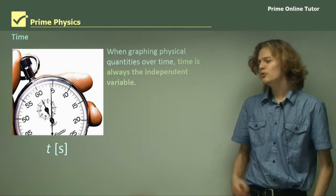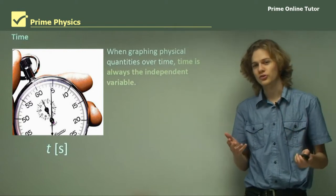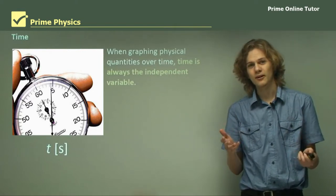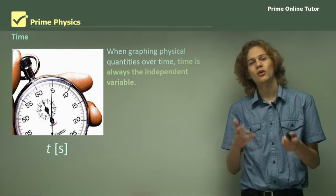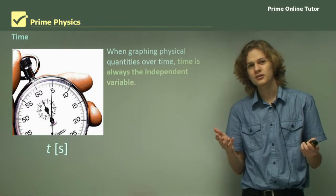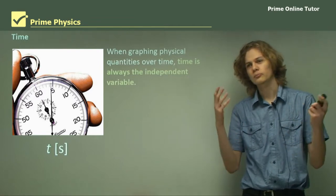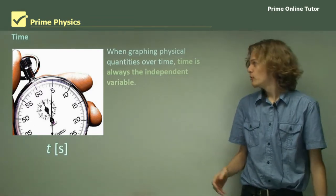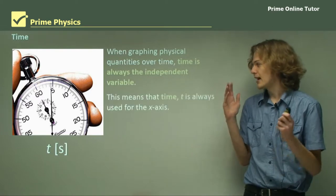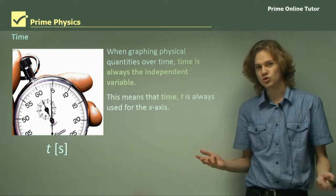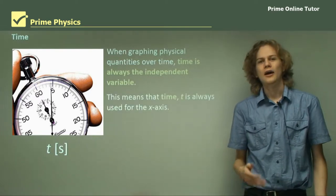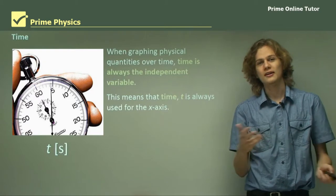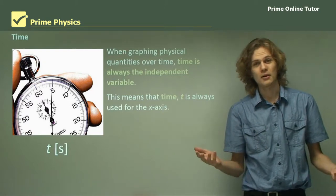Now when we're graphing physical quantities over time, time is always the independent variable. It's the variable that we can't change, and so it's not ever dependent on anything. So we put it on the x-axis as normal. In science we always put the independent variable on the x-axis, whatever that may be.